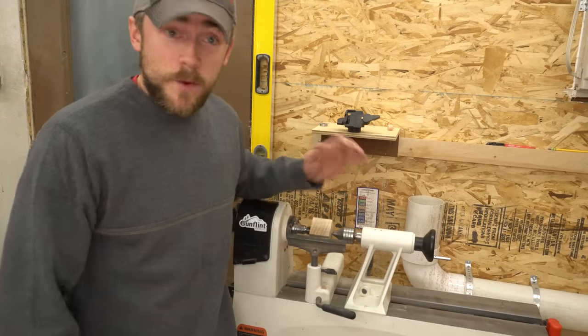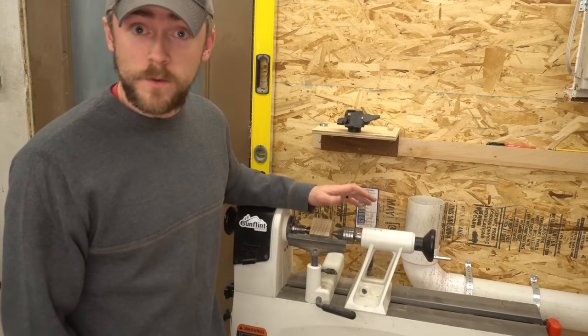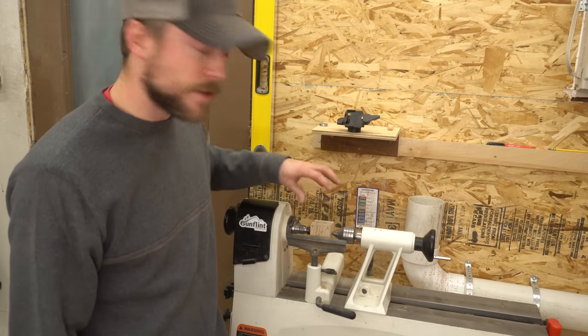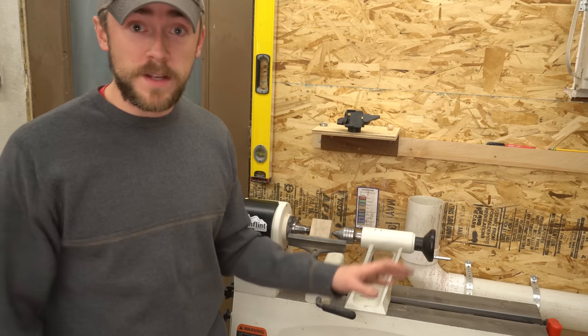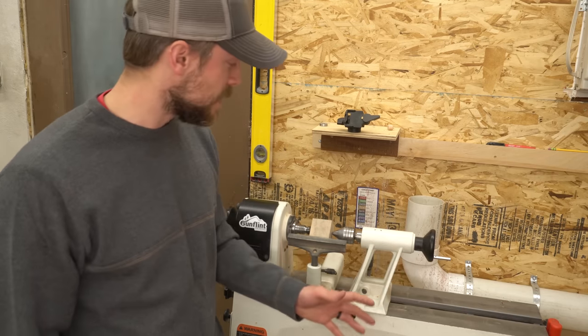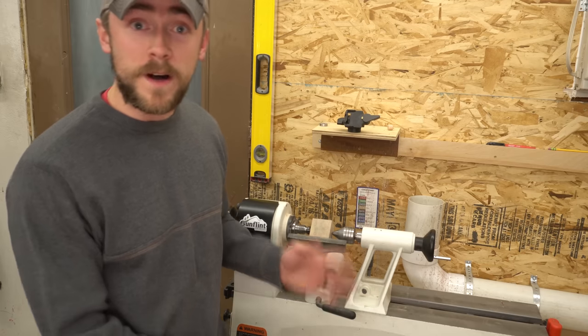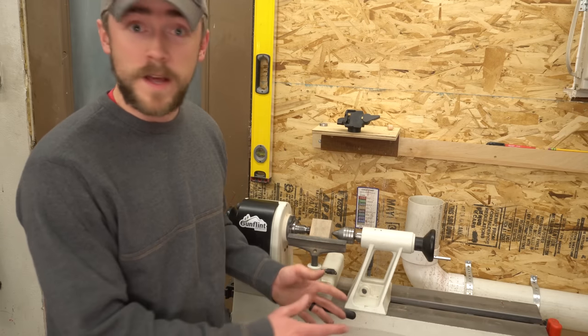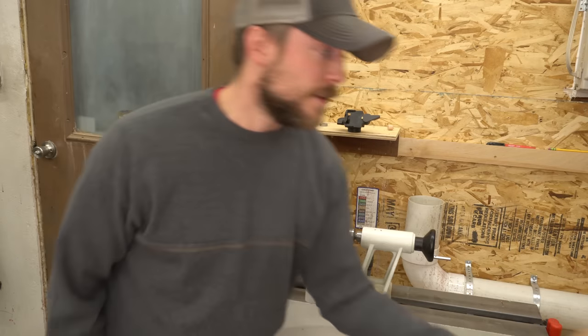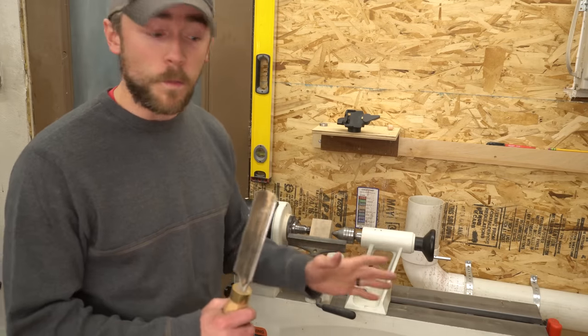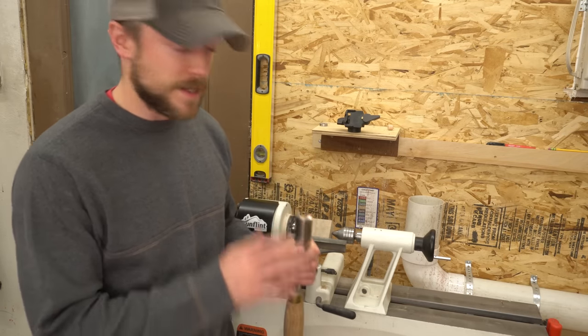So I wanted to illustrate what happens when you do things the wrong way. So I took that blank that I drew all over and chucked it up in the lathe with the end grain coming at us. I'm going to turn it on to a not quite high enough speed. It's actually about where you would want it if you were just regularly roughing a blank, but with end grain it's going to be too slow.